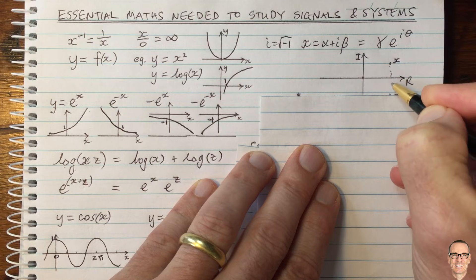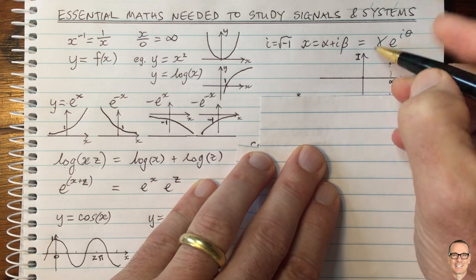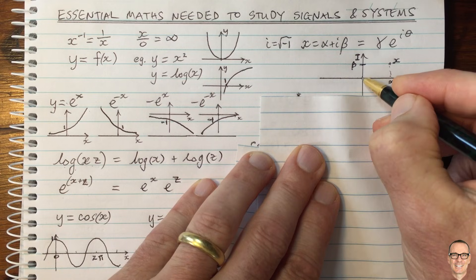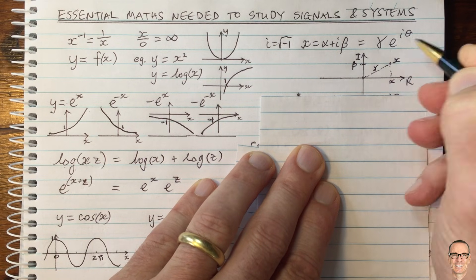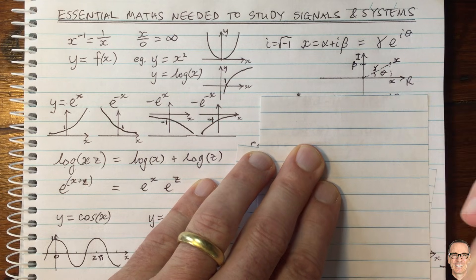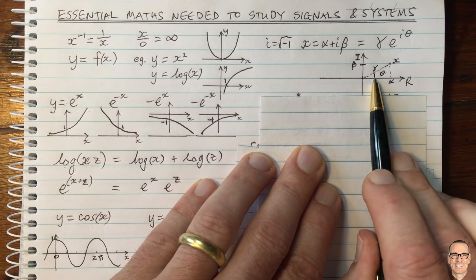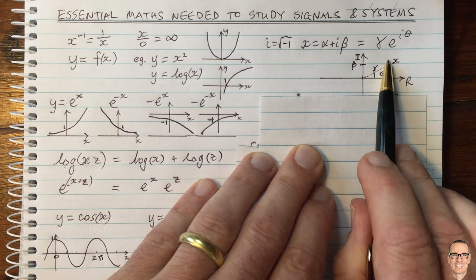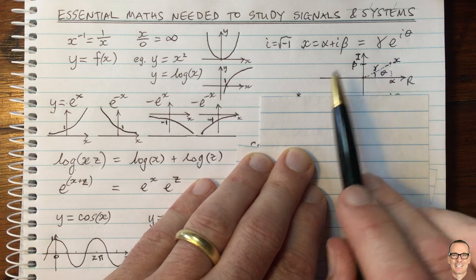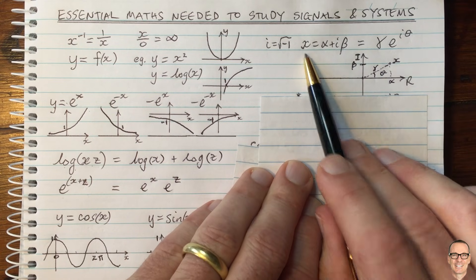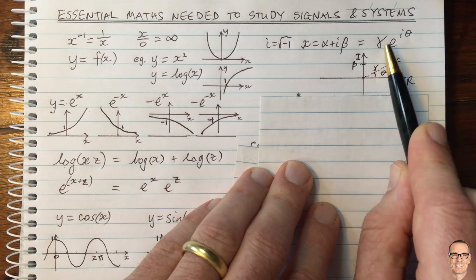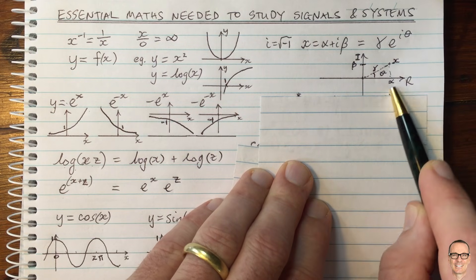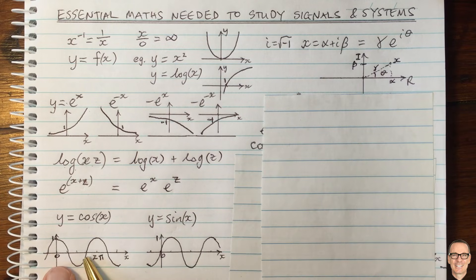In the complex plane diagram, alpha is the real value, beta is the imaginary or complex component, and gamma is the distance straight along to the point — the magnitude. The phase theta is the angle measured with respect to the real axis. As theta gets bigger, if gamma stays the same, the point moves around in a circle. So if you keep the magnitude the same and change the phase, the location of your complex number will move around in a circle.